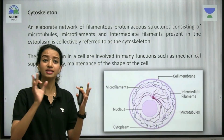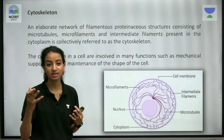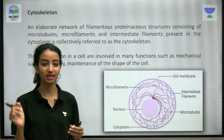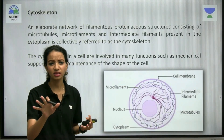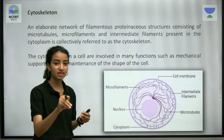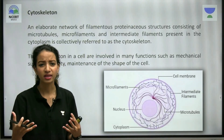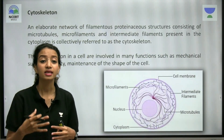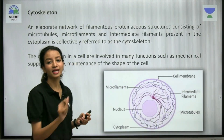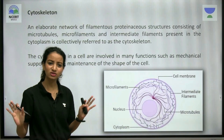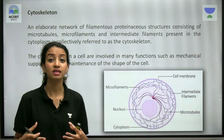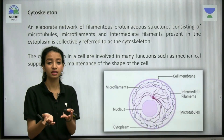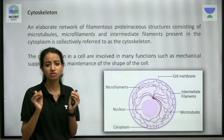Cytoskeleton refers to the skeletal structures which you can see inside the cell. The word 'cyto' means cell, so cytoskeleton means the skeletal structures found inside the cell. It does not mean it is made up of bones — inside the cell, the skeleton is actually made up of some filaments and tubules, which are supporting structures. So cytoskeleton simply means the structures that support the cell and maintain the shape of the cell.